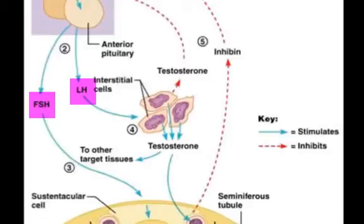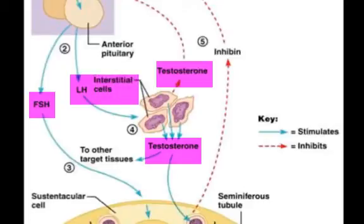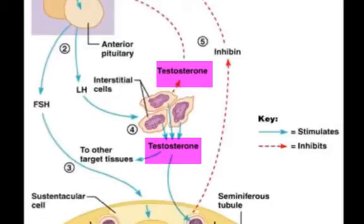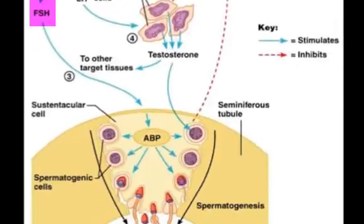LH stimulates certain cells of the testes called interstitial cells to produce testosterone. Testosterone stimulates secondary male characteristics such as larger muscle mass, bone mass, and increased metabolism. FSH also stimulates sperm production in the seminiferous tubules.